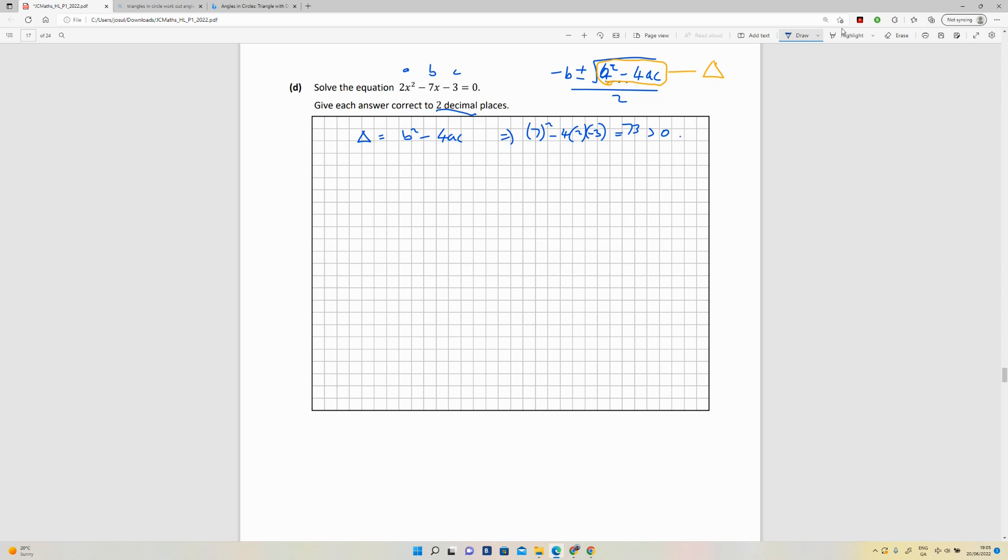So we're going to have two answers here. So x1 and x2 are going to be equal to minus b plus or minus theta all over the standard 2a. Okay, so x1 is going to be minus b plus theta, so that's going to give me 7 plus the root of 73 all over 2a which is 4.